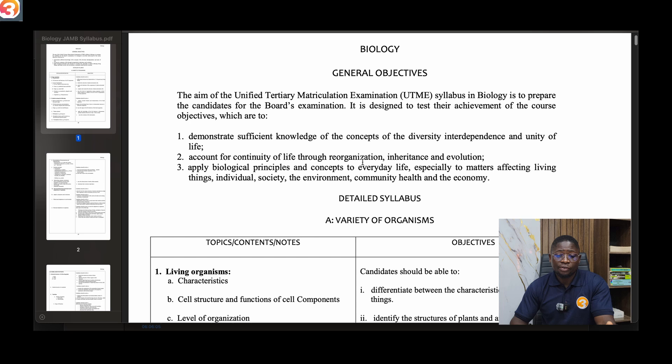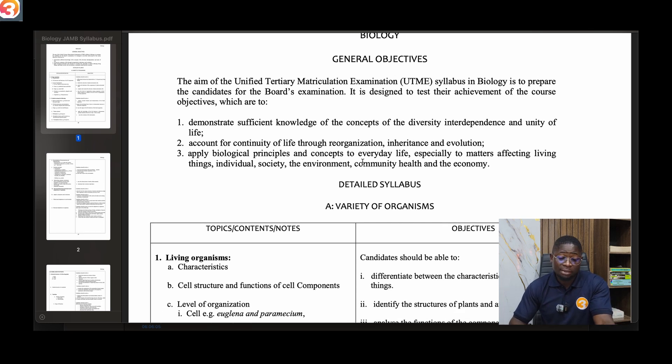The aim of the Unified Tertiary Matriculation Examination UTME syllabus in biology is to prepare the candidate for the board's examination. It is designed to test the achievement of the course objectives, which are to demonstrate sufficient knowledge of the concept of diversity, interdependence and unity of life, to account for continuity of life through reorganization, inheritance and evolution, and to apply biological principles and concepts to everyday life, especially to matters affecting living things, individual society, the environment, community health and the economy.